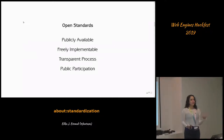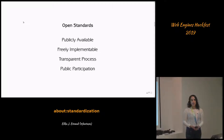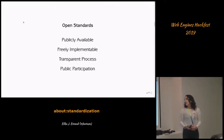There are closed standards and open standards. On the web, we deal with open standards. ISO may be considered closed because you can't participate unless you're a governmental organization, and you have to pay a lot to access it. We do open standards here: our standards are publicly available, freely implementable — meaning they're not patent encumbered — so you can implement CSS without worrying about Microsoft suing you. And we have a transparent process so you can understand what's happening and why.